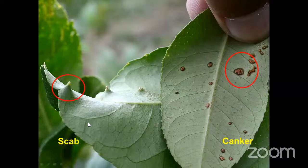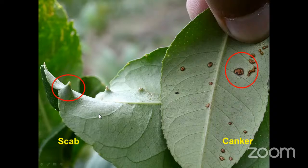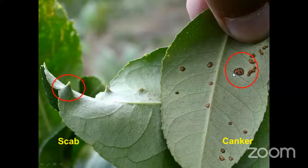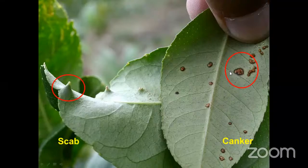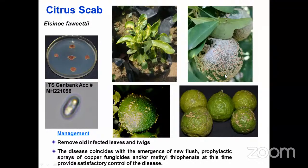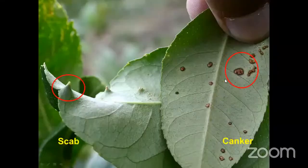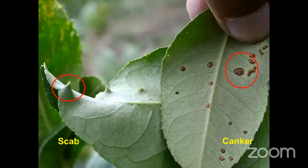In scab infection, protuberances appear on the leaf — just like a pin-prick symptom — with no water-soaking. In canker, water-soaking will be present around the brownish lesion. When water-soaking is present, it indicates bacterial infection, mostly citrus canker (Xanthomonas). If water-soaking is absent and only scab lesions are present, it is citrus scab. Rangpur lime is susceptible to both canker and scab, so correct identification of which pathogen is infecting is important.